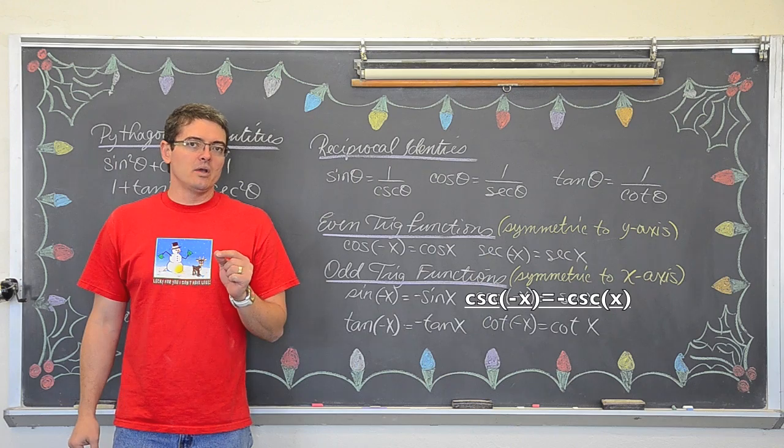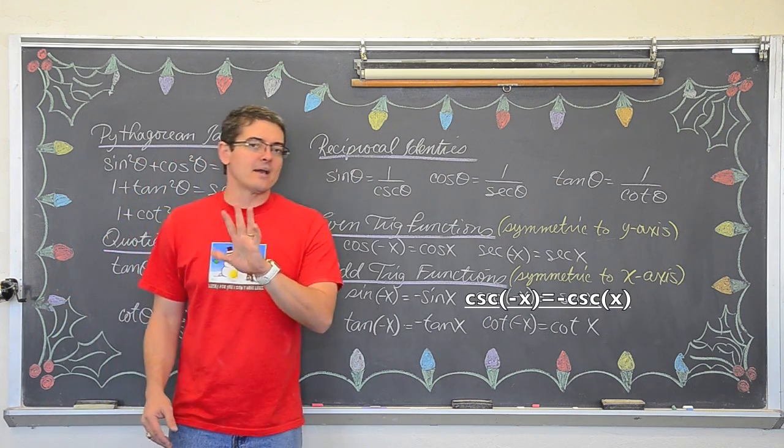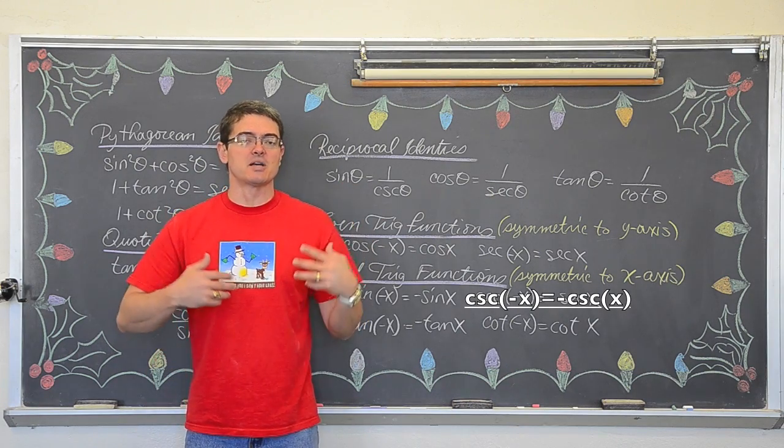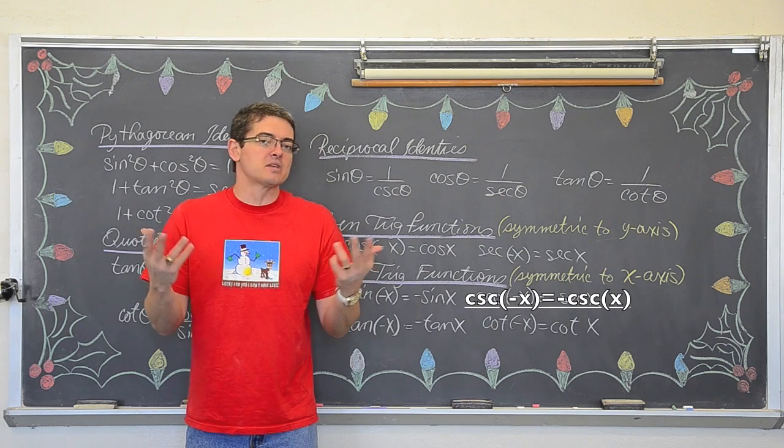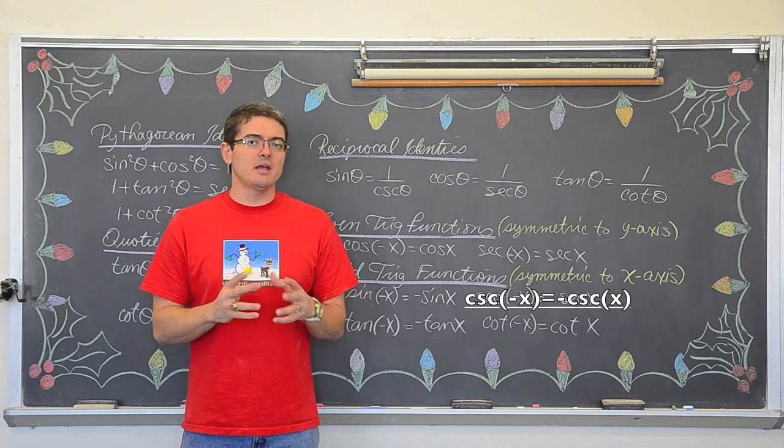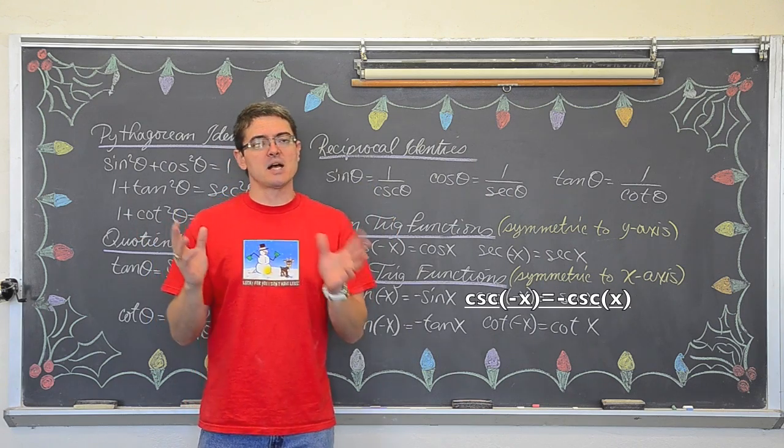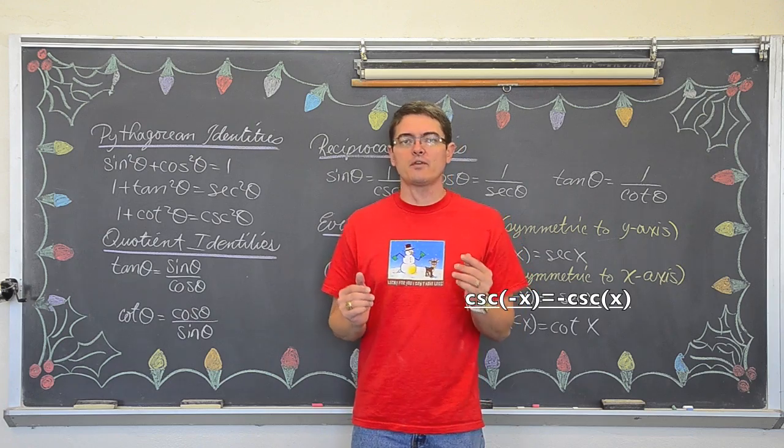What you are not allowed to do though is you are not allowed to move or do mathematical functions to both sides of these proofs. Like you are not allowed to add two to both sides, subtract a sine from both sides. You are not allowed to square root both sides of the equation or the identity that you are proving. You are only going to be able to work with each side independently. You can work with both sides of these proofs, but you cannot move things from side to side like you are actually solving an equation.